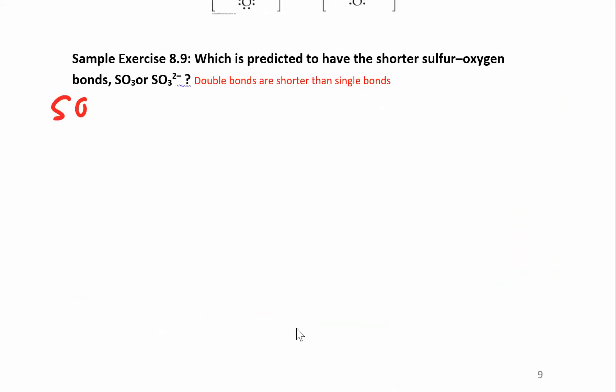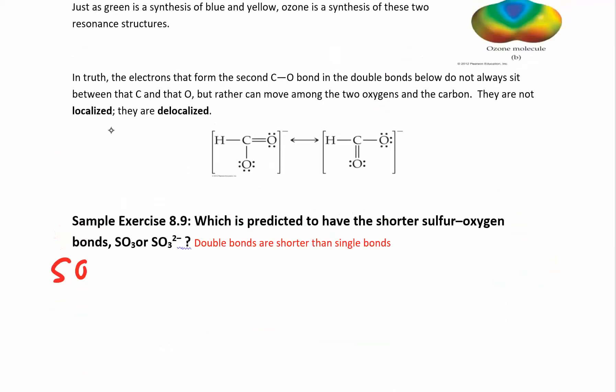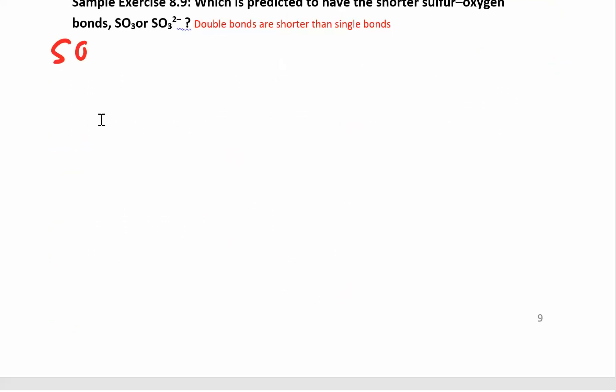SO3. So sulfur has 6. Oxygen has 6 times 3 gives me 18. And 6, you have 24. So sulfur, oxygen, oxygen, oxygen. I used up 2, 4, 6. I have 18 left over.